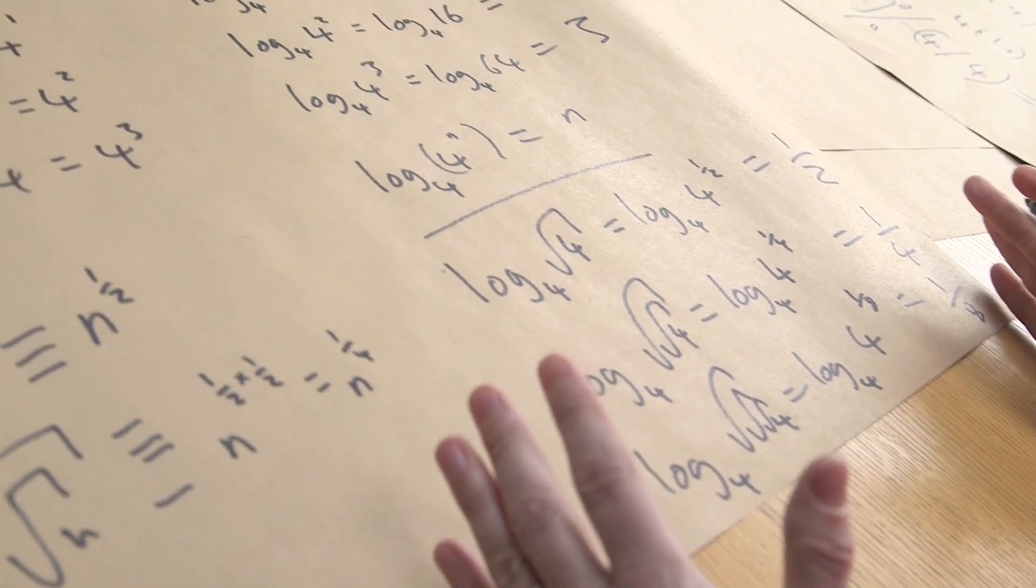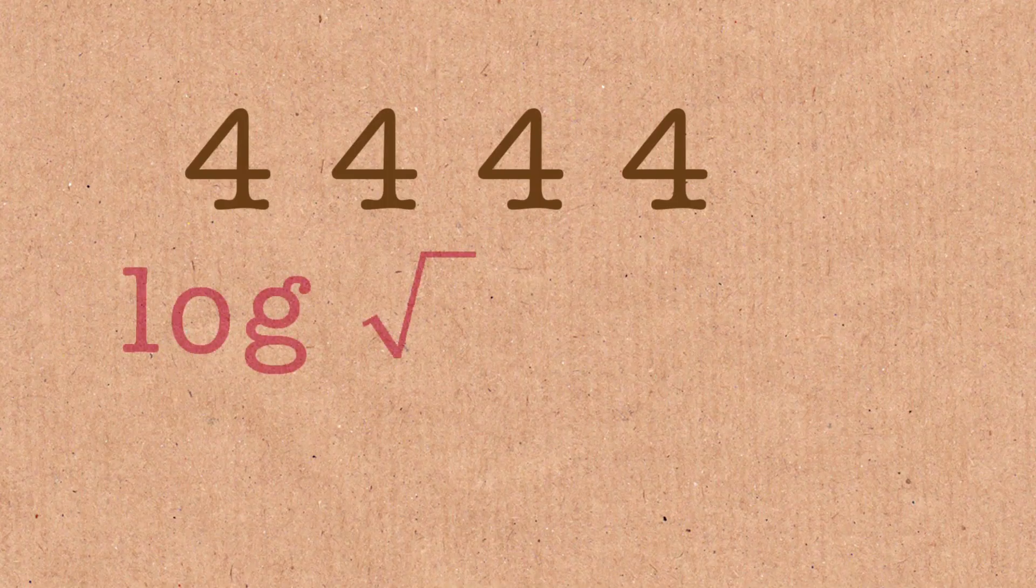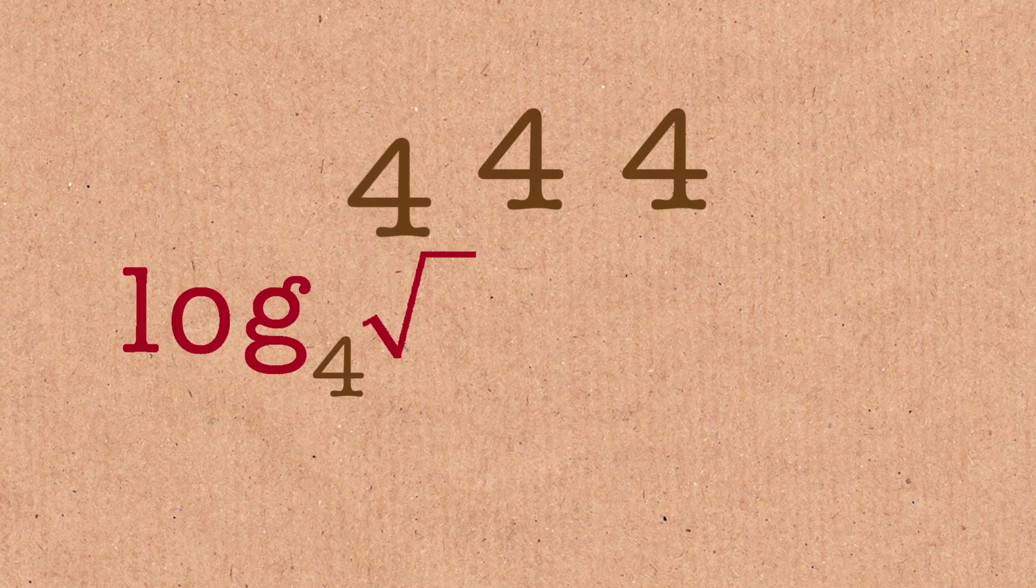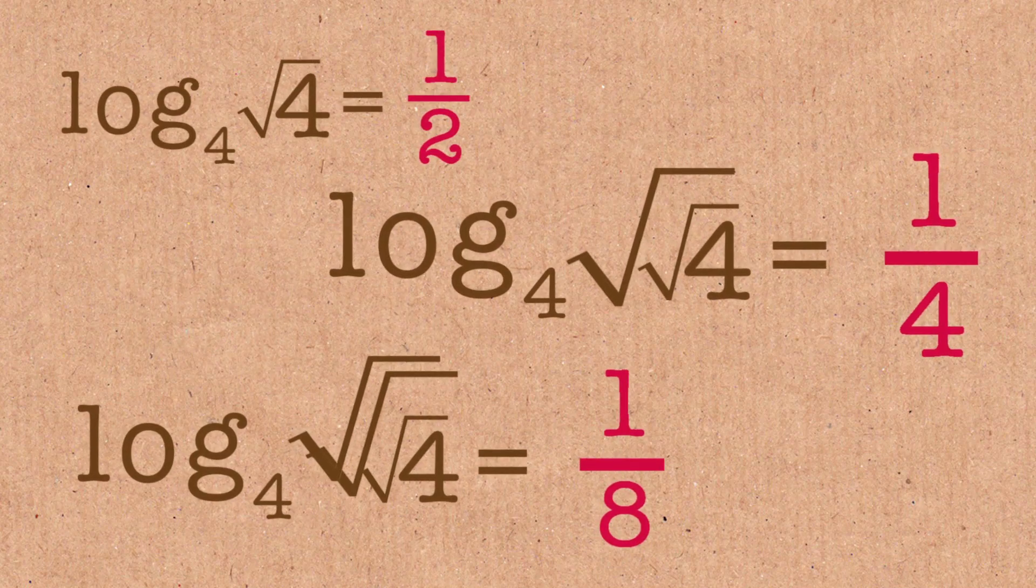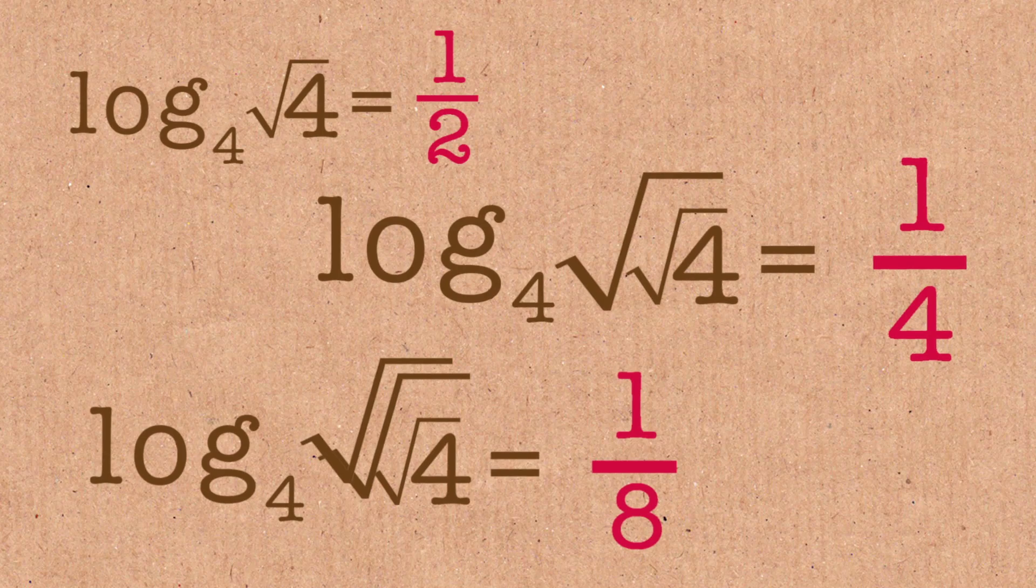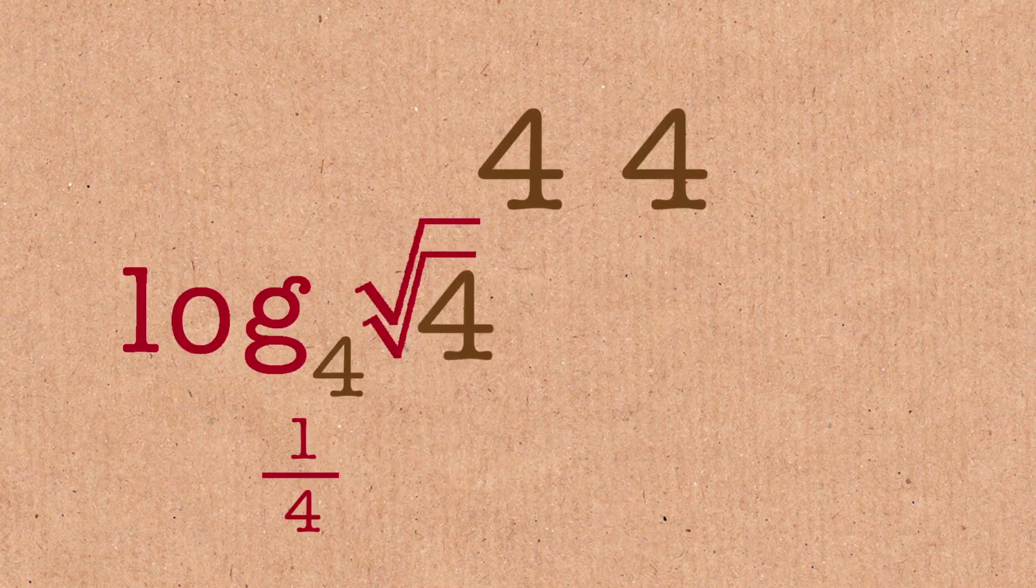So we are halfway there to proving the four fours to infinity because what we've actually done, we've got two fours. We know log 4 to the square root of 4 is half. Log 4, the square root of the square root of 4, is a quarter. So we know that just using two fours, we can get the halving sequence, which goes half, quarter, eighth. So we've got two fours left and let's see how we can get there.